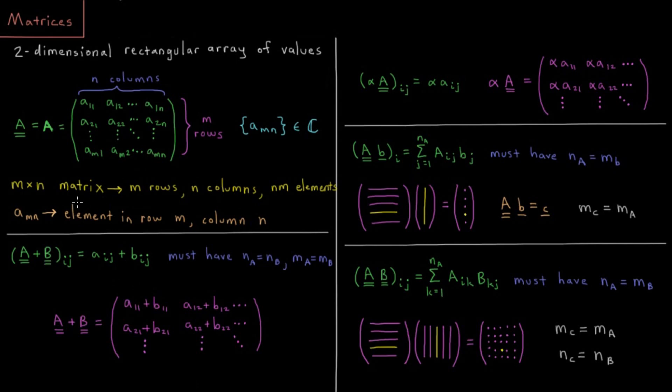So what can we do with matrices? We can add matrices together if they have the same number of columns and the same number of rows. In that case, if the sum of two matrices, element ij in A plus B would just be little aij plus little bij.